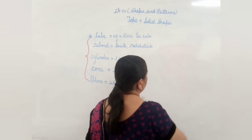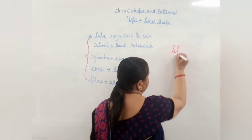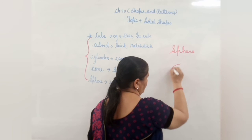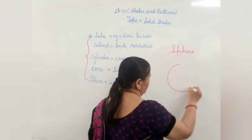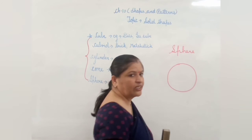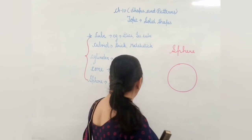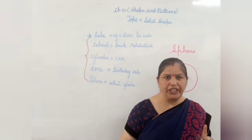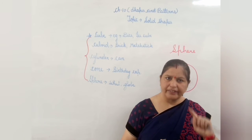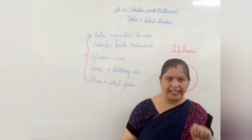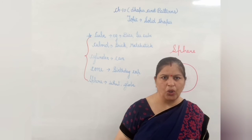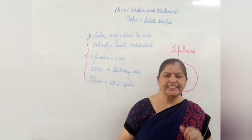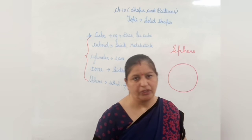And now we will come to the last one. That is sphere. Sphere is round in shape, like this. What are the examples? Wheel — car wheel, scooty wheel — that is the example of sphere. Globe, earth, sun — all these are the examples of a sphere.